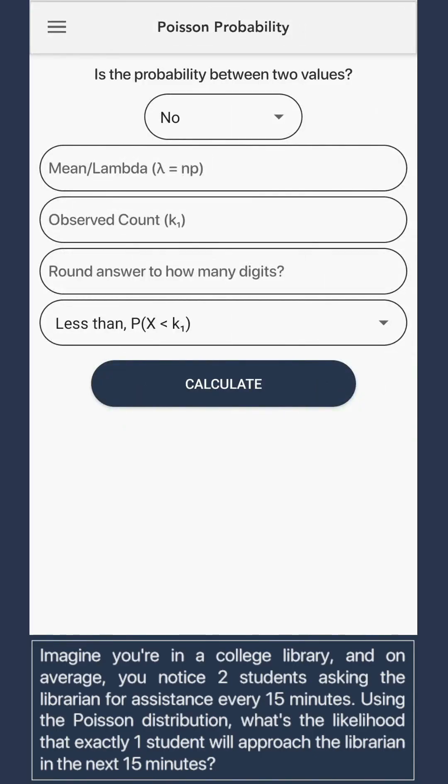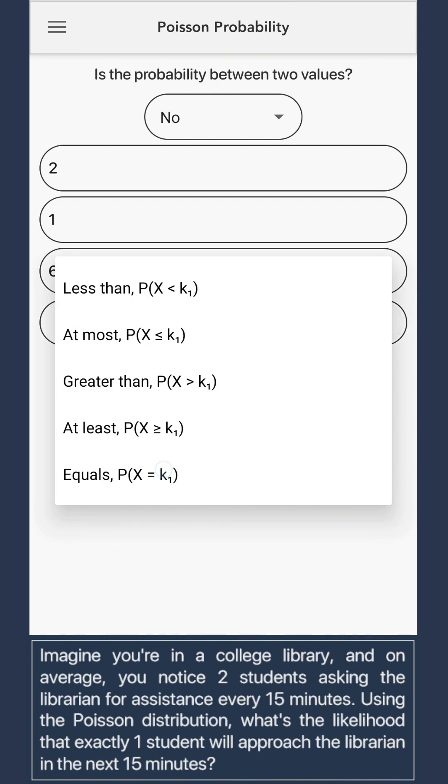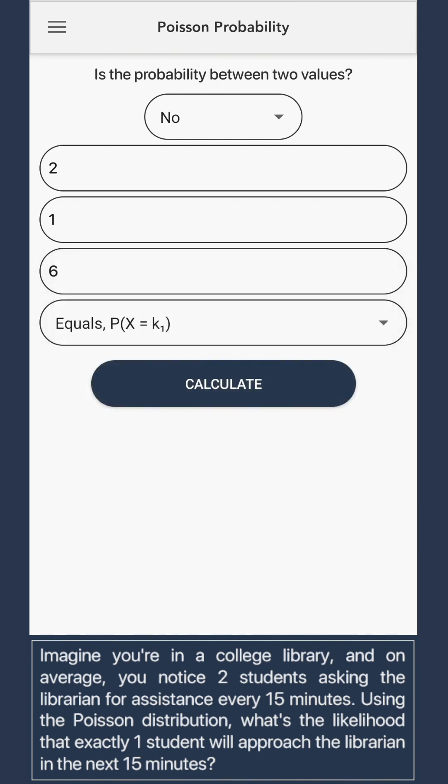On the calculator's landing page, we'll fill in a few key values. Start with lambda, average rate, set to 2 for students asking for help in a 15-minute interval. Input observed count, one student asking for help in the next 15 minutes. Round answer to 6 decimals, and select equals for exact probability as specified in the question.